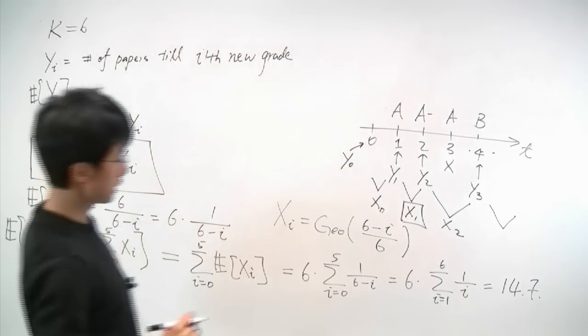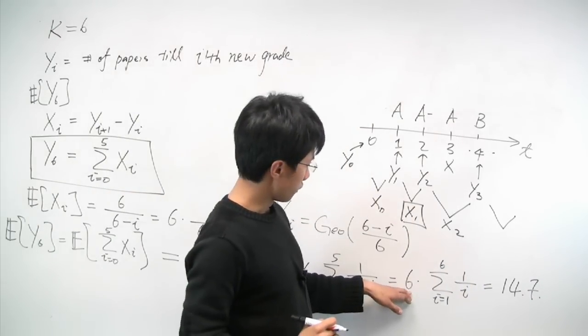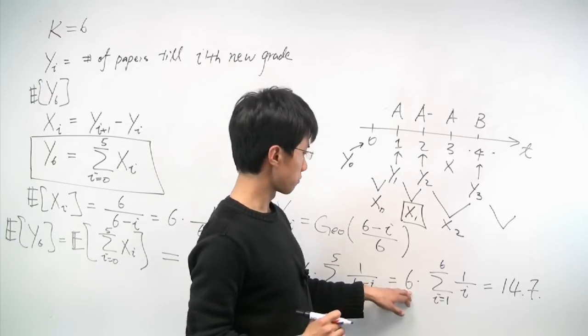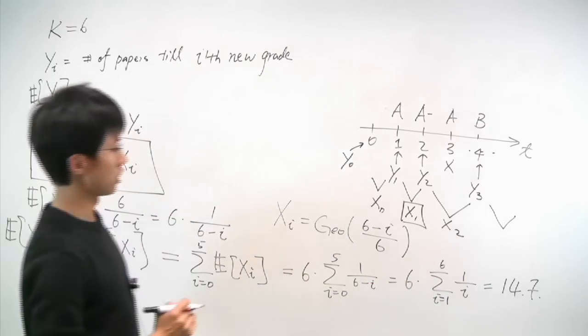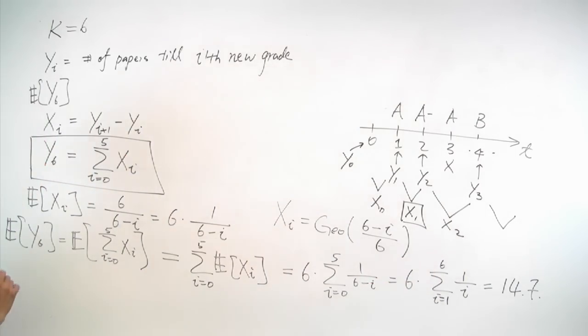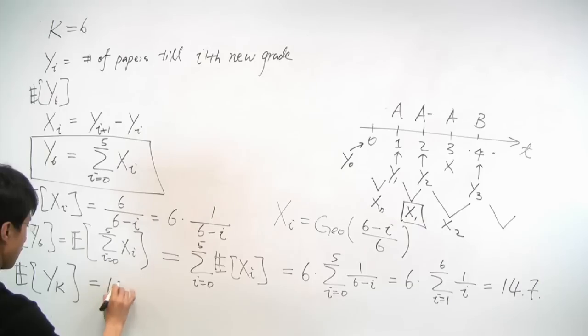Now, more generally, we can see that there's nothing special about the number 6 here. We could have substituted 6 with the number, let's say, k. And then we'll get expected value of yk. Let's say there are more than 6 labels. And this will give us k times summation i equal to 1 to k of 1 over i.